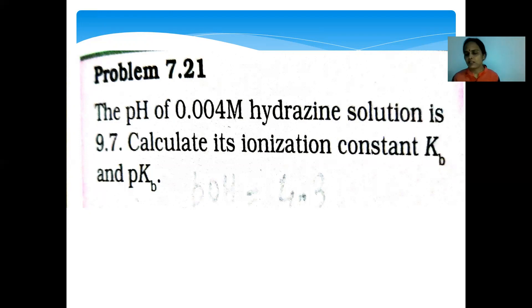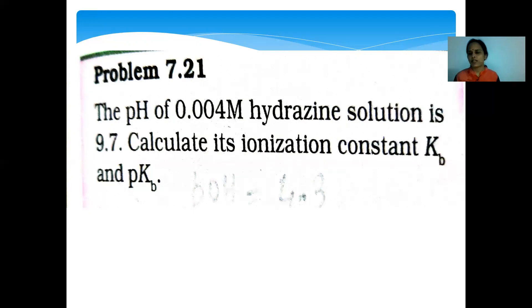Kb = [NH₂NH₃⁺][OH⁻] / [NH₂NH₂] = (5.012 × 10⁻⁵)² / 0.004 = 8.96 × 10⁻⁷. pKb = -log Kb = 6.04.